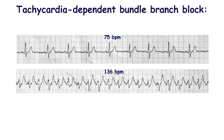The heart rate at which there is transition between normal conduction and bundle branch block is about 100 beats per minute. In this case, the term tachycardia dependent bundle branch block is used.